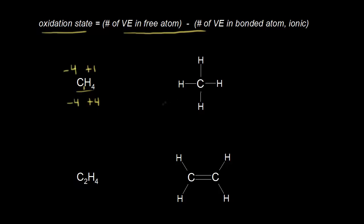Let's verify that with our dot structure. When we're calculating the oxidation state using dot structures, we're thinking about bonding electrons, and we know that each bond consists of two electrons, so we need to put in the bonding electrons for all of our bonds. Next, we think about the oxidation state for carbon, and we start with the number of valence electrons in the free atom — the number of valence electrons carbon is supposed to have, which is four. From that number, we subtract the number of valence electrons carbon has in our drawing, but we need to think about these covalent bonds as being ionic, so the more electronegative atom takes all of the electrons in the bond.